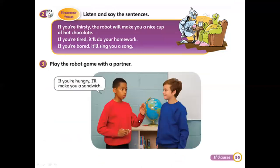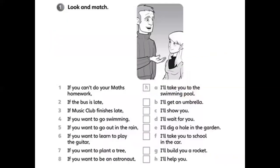Now you have to do this game as a mime. Work in pairs — for example, the first student mimes a robot and talks to the other student, giving a promise: 'If you are hungry, I'll make you a sandwich.' So one student acts like a robot and gives if-clause promises to the other. We will do this exercise in our meeting, inshallah.